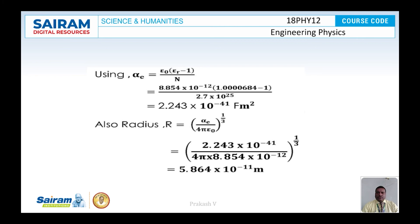Using the equation αₑ = ε₀(εᵣ − 1)/n, substitute the values of ε₀ and εᵣ. The value of αₑ = 2.243×10⁻⁴¹ farad·meter cube. Then the radius r is found by substituting αₑ and ε₀ into the appropriate equation. Finally, the value of r = 5.864×10⁻¹¹ meter. This is the way of calculating αₑ and r.